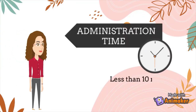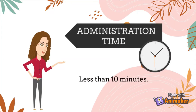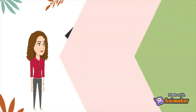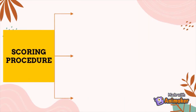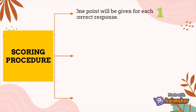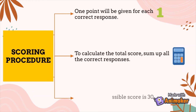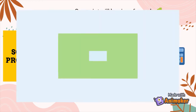The administration time for this assessment is less than 10 minutes. For the scoring procedure, one point is given for each correct response. To calculate the total score, sum up all correct responses — the highest possible score is 30.